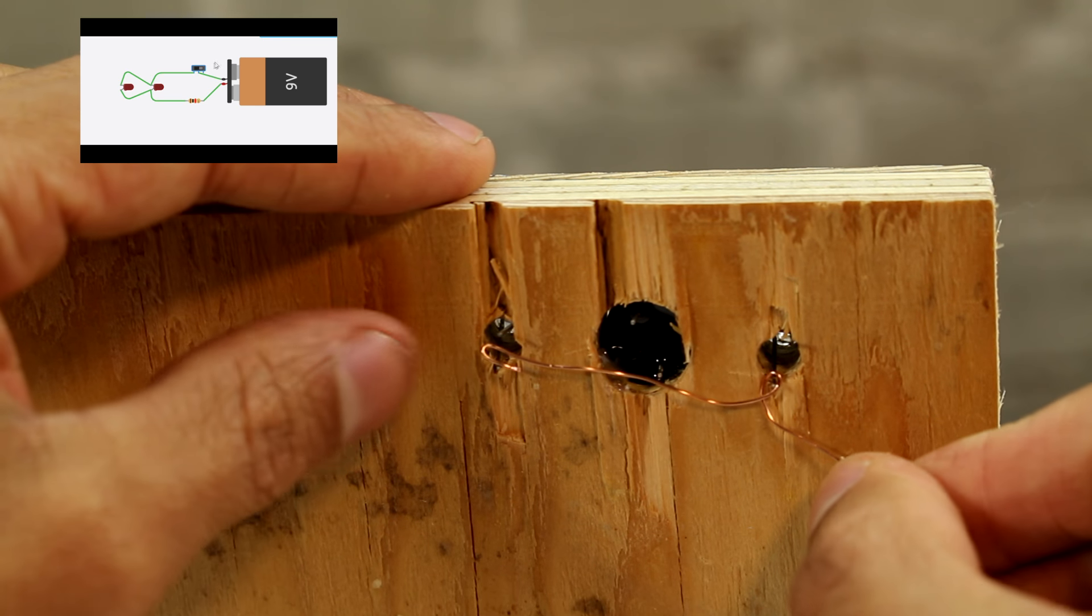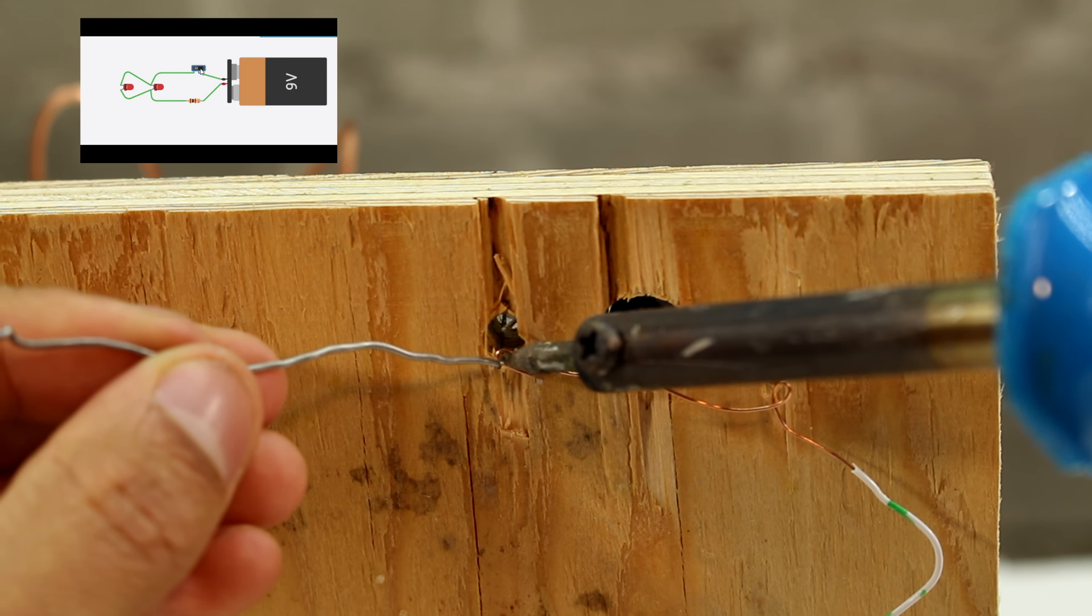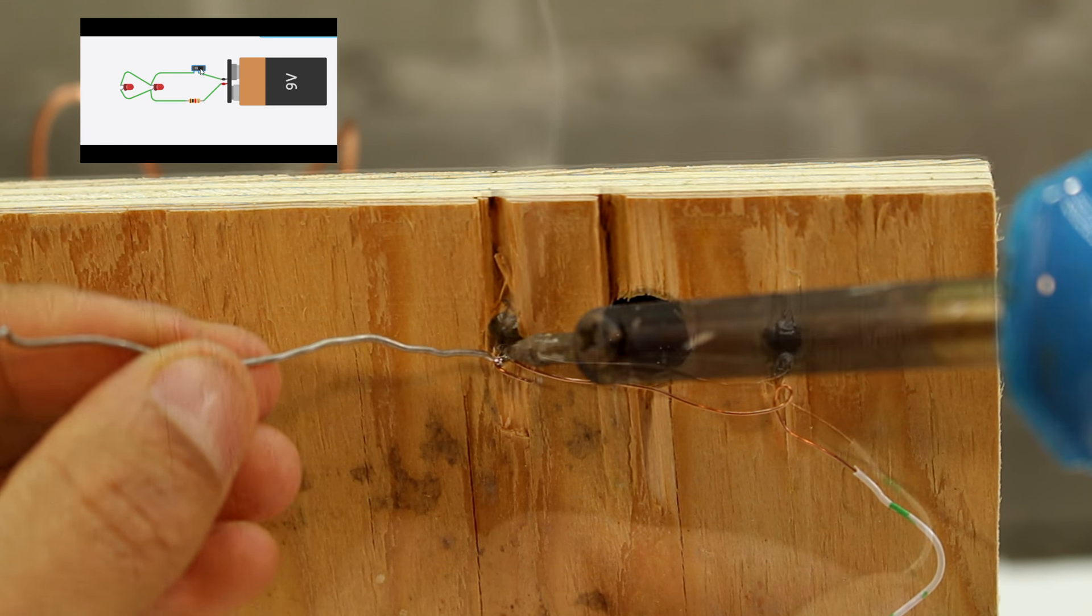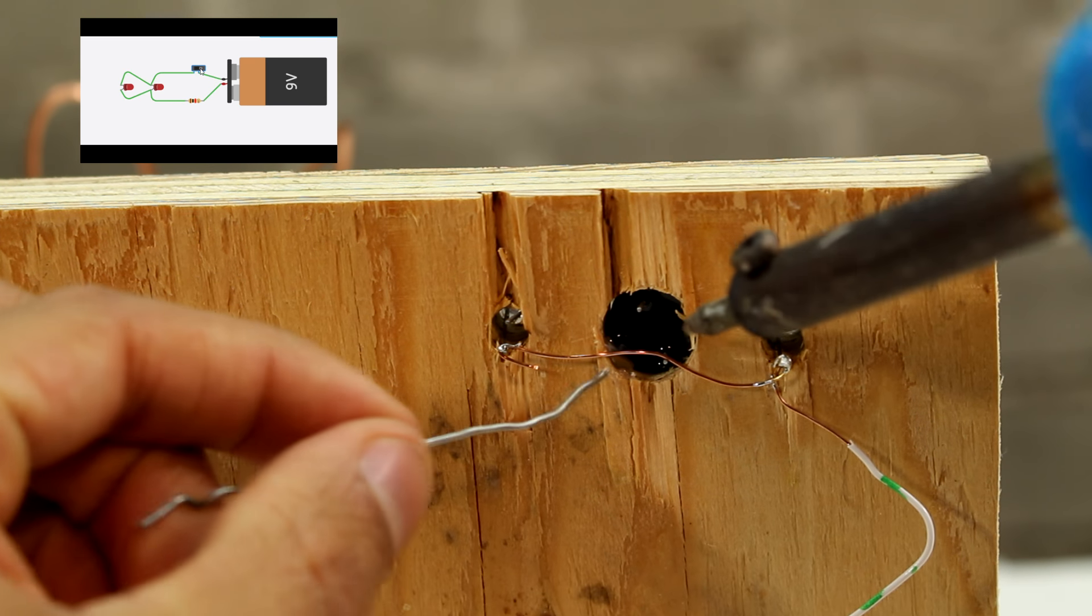Now we can flip to the bottom side and wire everything up the way that it's shown in our circuit diagram. Remember, instead of the switch, we have the loop that you're holding in your hand touching the game wire, which completes the circuit and acts as a switch.